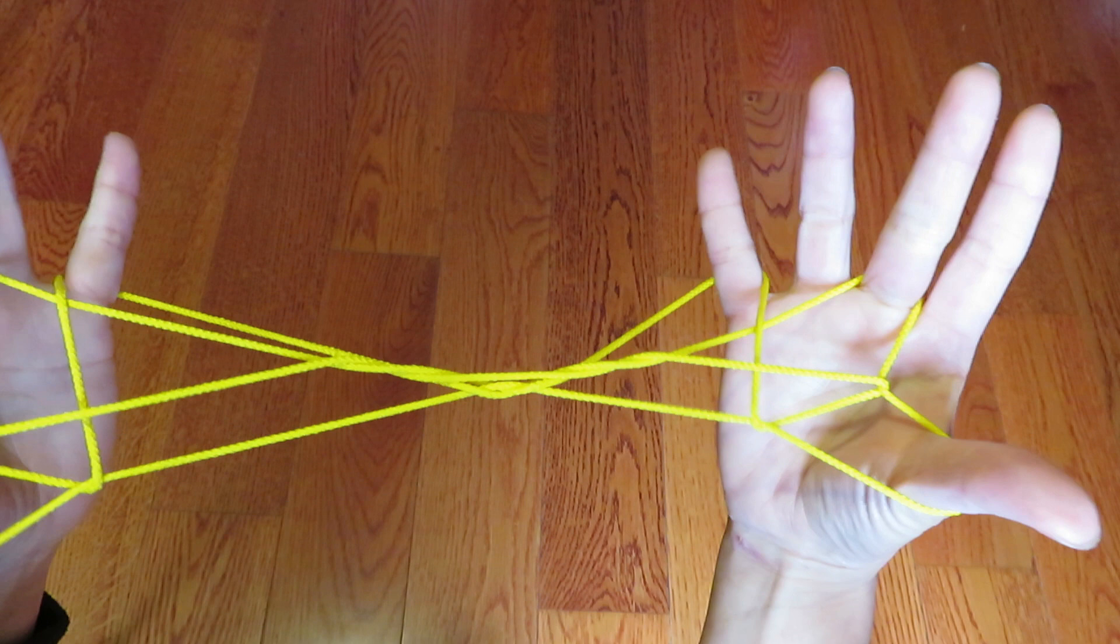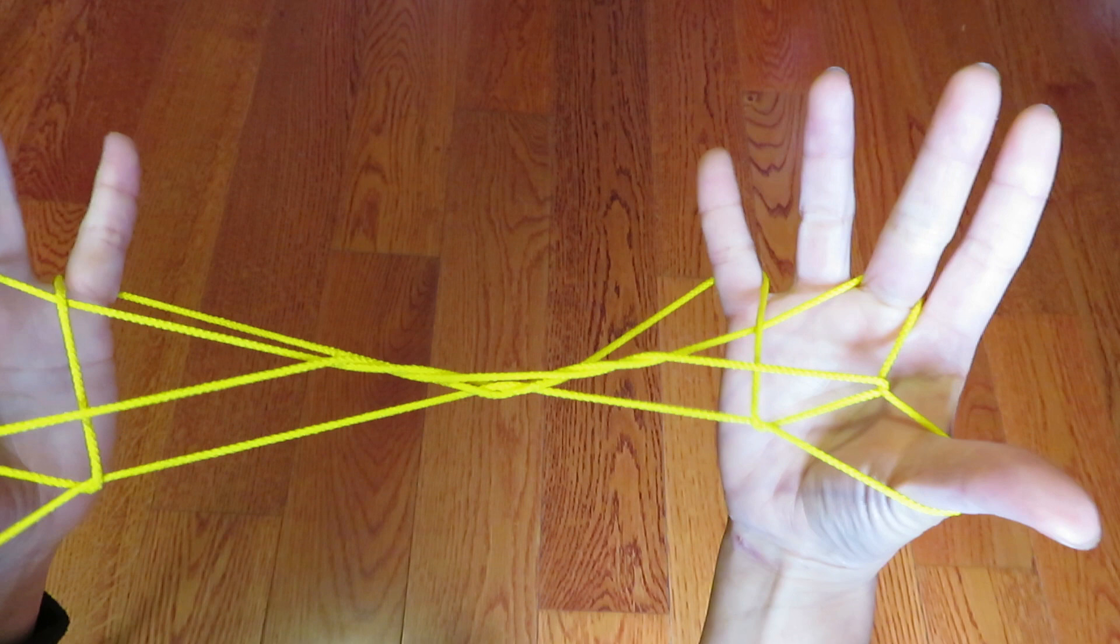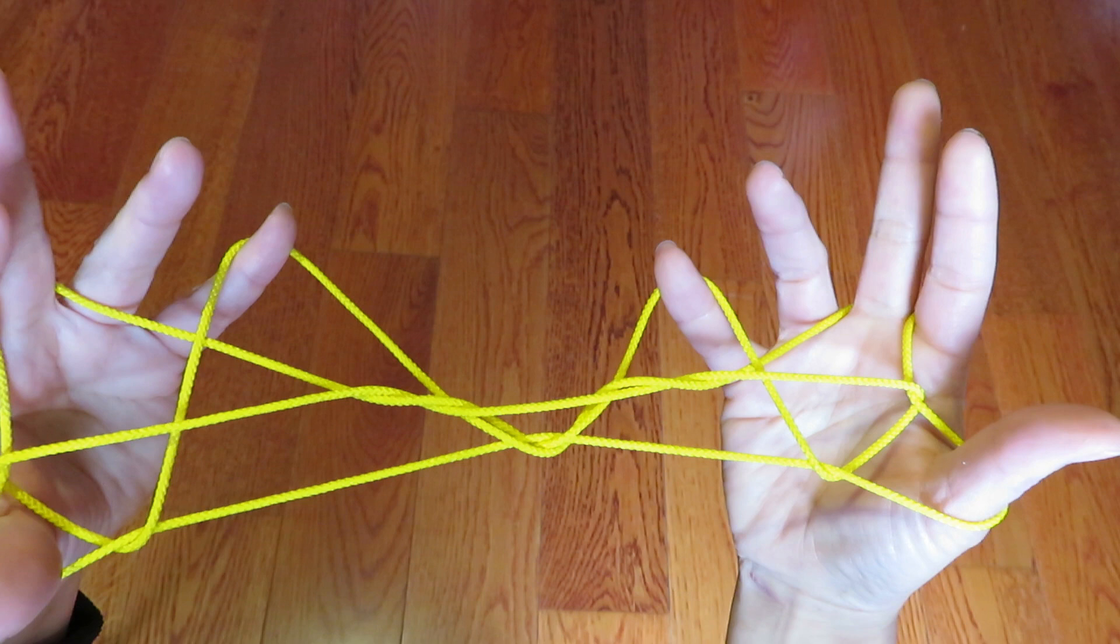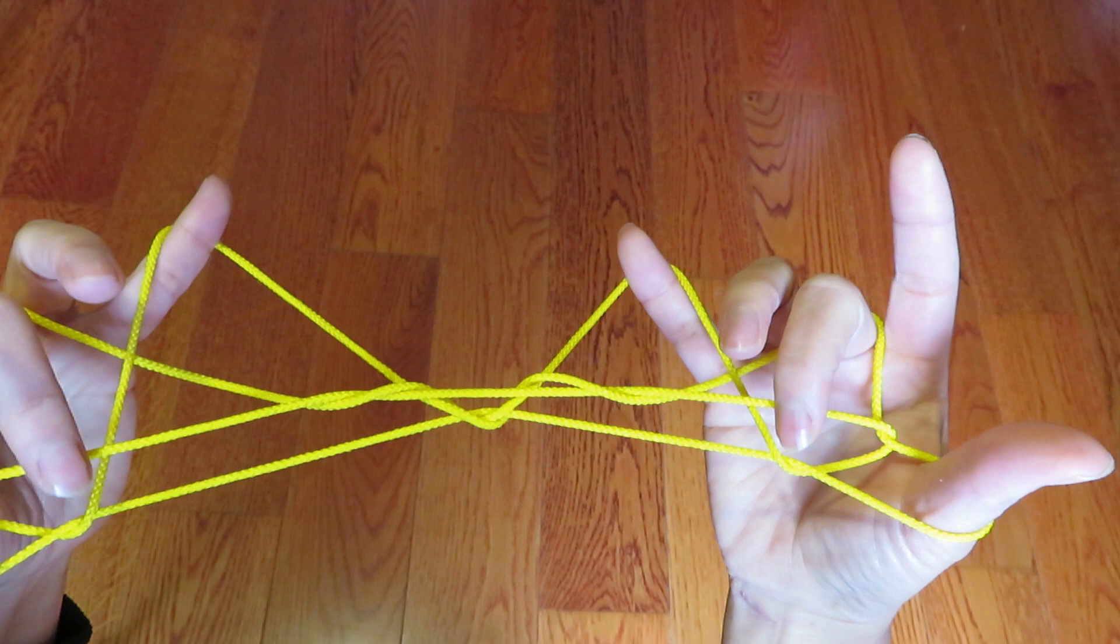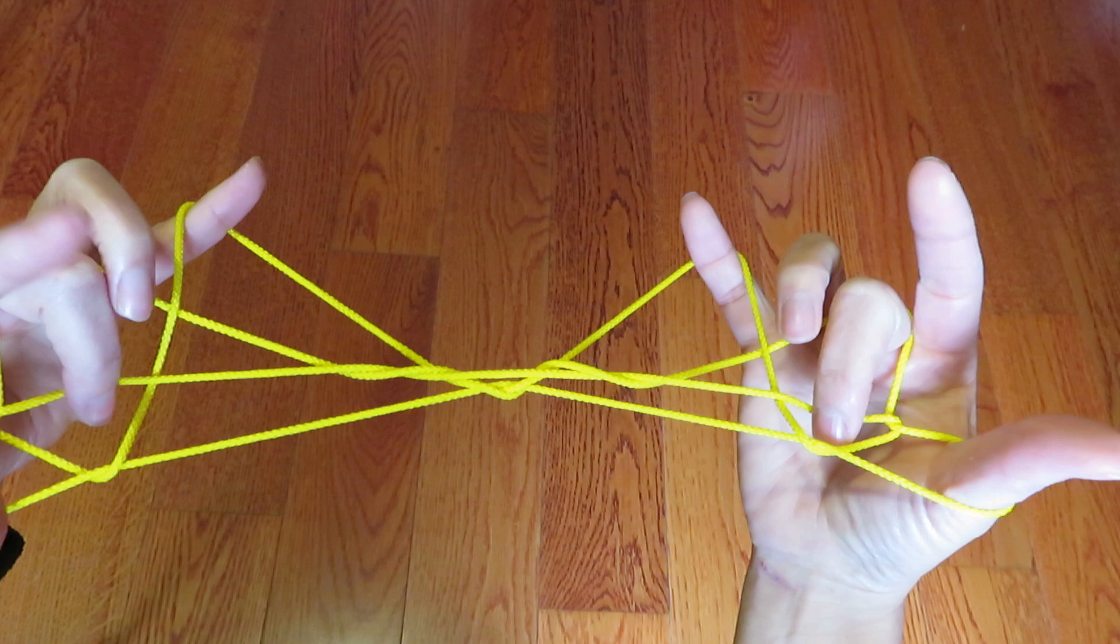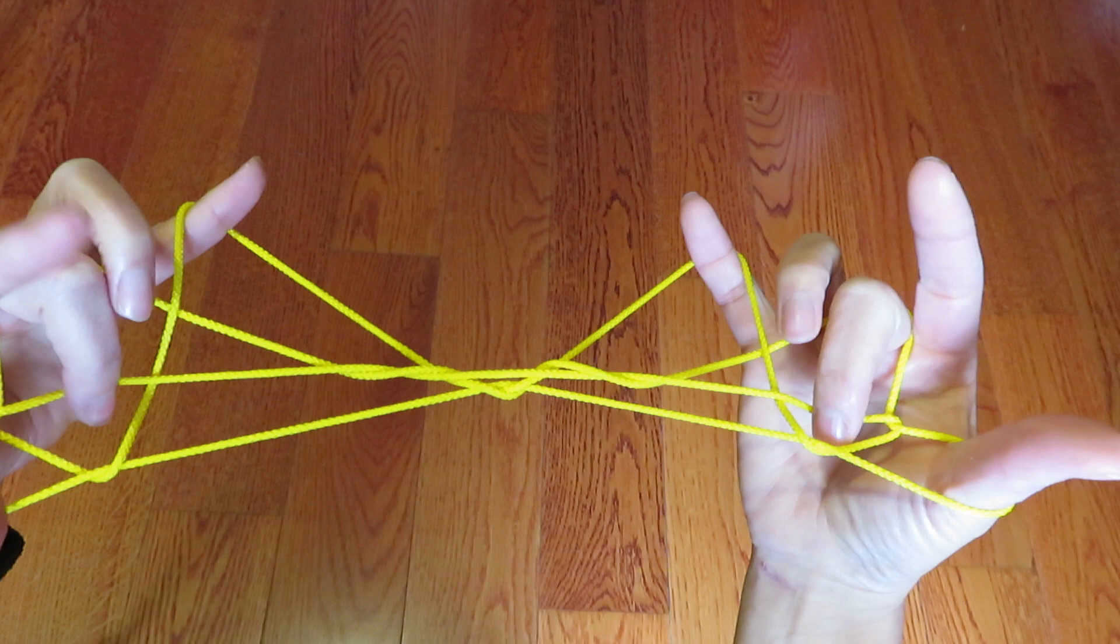Now, put your middle finger here. But, before that, let this, kind of let, prepare to let these pinky go. So, bring, you know, the strings up by the nail of pinky. And then, put the middle finger into these two triangles here.